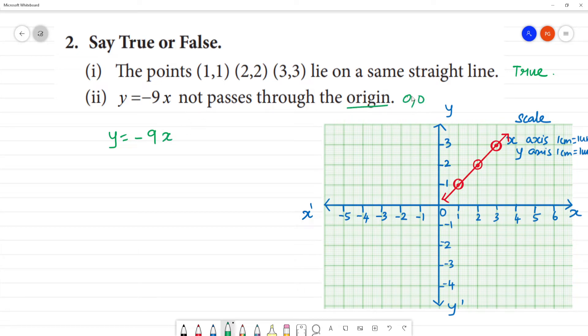The origin is (0,0). The statement says it does not pass through the origin. For example, if you substitute x = 0, then y = -9 times 0, which equals 0. So we get the point (0,0). This is x and this is y.